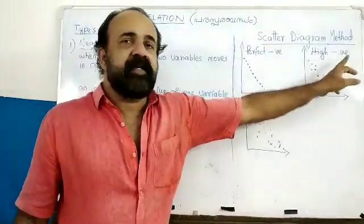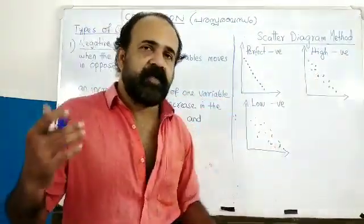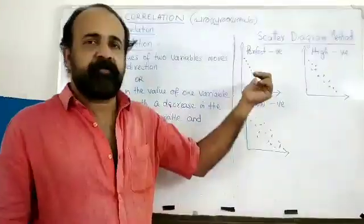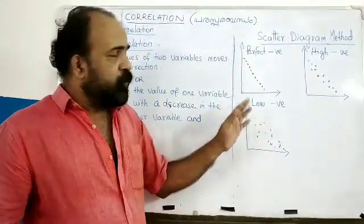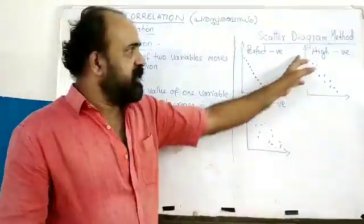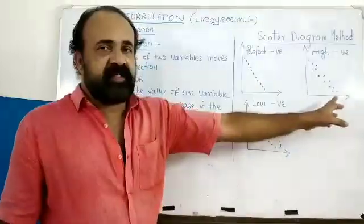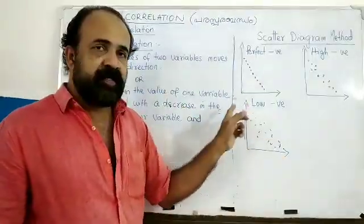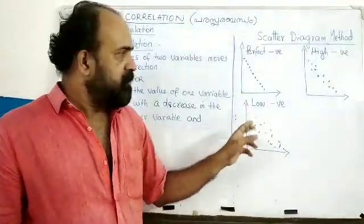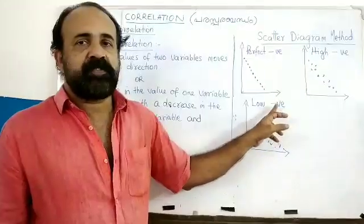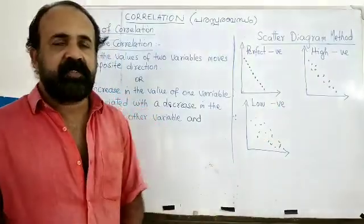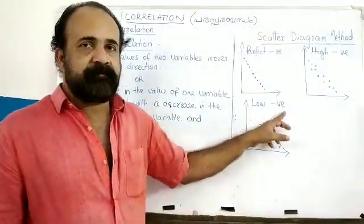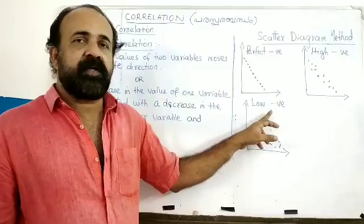A high degree of negative correlation means the values are very high in the opposite direction but do not fall exactly on a straight line. A low negative correlation means the relationship is very weak in the opposite direction.